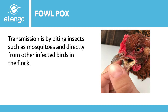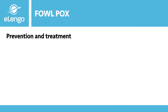How is fowlpox transmitted? Fowlpox is transmitted to flocks by biting insects, especially mosquitoes, and also when we introduce a new bird into the flock that had been infected with the virus and recovered but is now shedding the virus in the environment. Once a flock member is infected, the chicken can transmit the virus to other flock members through scratches or broken skin. The dried pox scabs that fall off the chicken during the disease can also serve as a source of infection, and the virus can survive in dried scabs for months or even years.